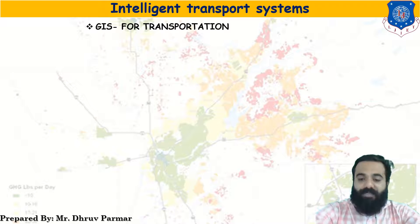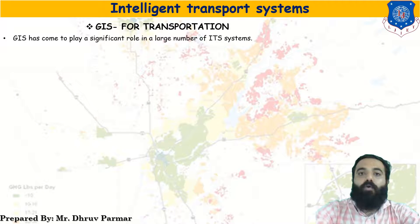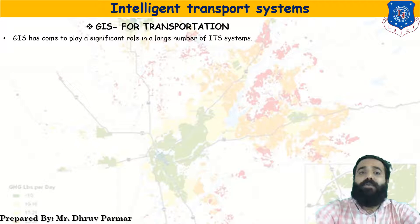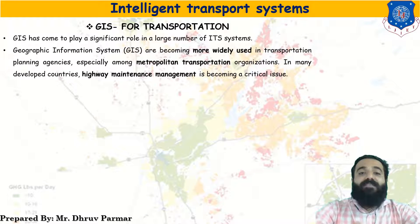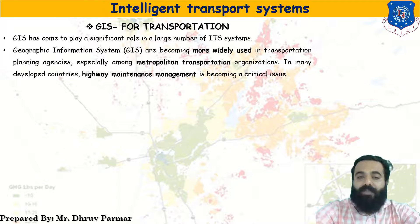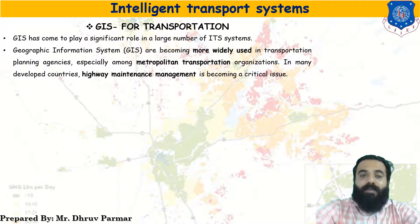GIS for transportation. You already studied the subject of GIS. GIS plays a crucial and important role in the intelligent transport system. GIS is widely used across different countries, different types of cities, different metropolitan transportation organizations, developed countries, and also in highway maintenance management. It is a very important tool for transportation.